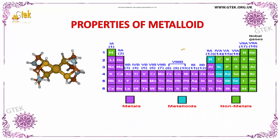In terms of periodic classification, we have the classification of metalloids along with a comparison of metals and non-metals. The green color represents the non-metals, pink represents the metals, and the metalloids are shown separately.